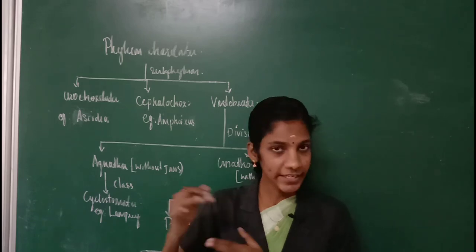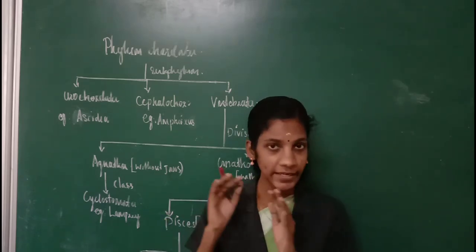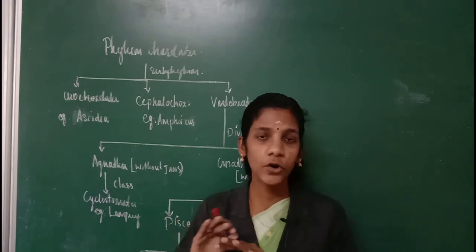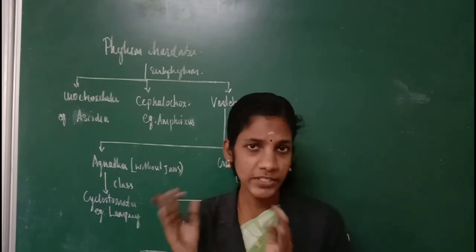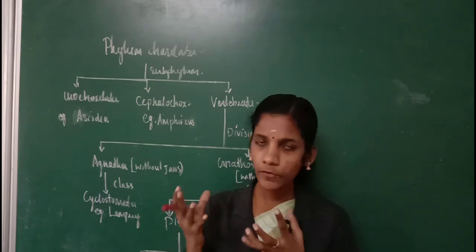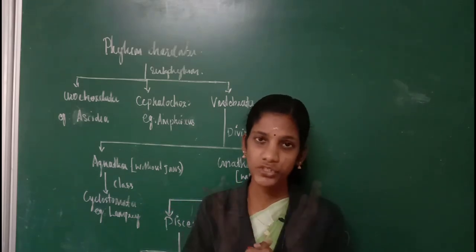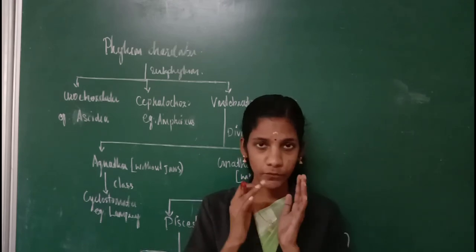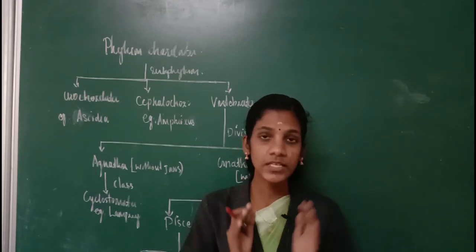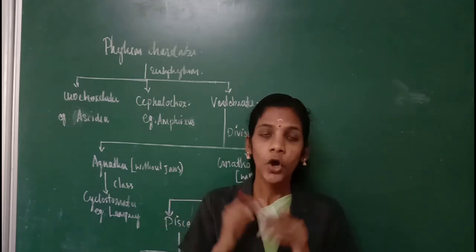But in the case of non-chordates, we cannot see this endoskeleton. Instead, their skeleton can be seen on the surface of the body in the form of scales or calcareous structures. Non-chordates always have a calcareous exoskeleton to protect them from external shocks or to provide support for their body.